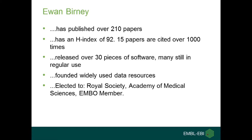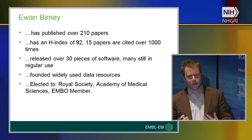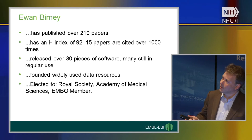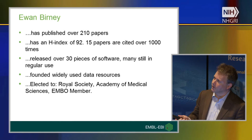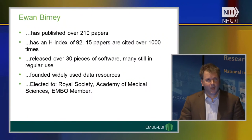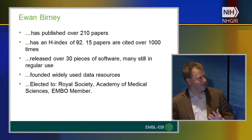How did I have the time to do this? I've published over 210 papers. I have an h-index of 92. I have 15 papers with over 1,000 citations. I've got 30 pieces of software that I have released to the world, and a whole bunch of those are still in use today. I've founded widely used data resources and been elected to august bodies — as a Brit, I'm incredibly honoured to be a Fellow of the Royal Society. I stand here amazed. I don't believe I could have really done this in this time. So how on earth did this happen?